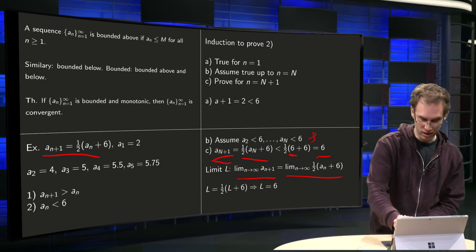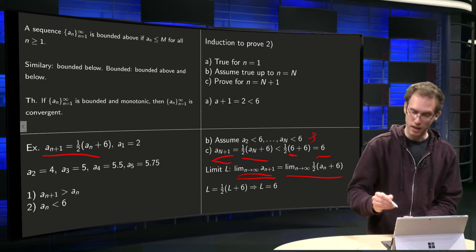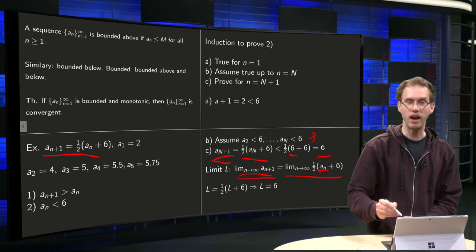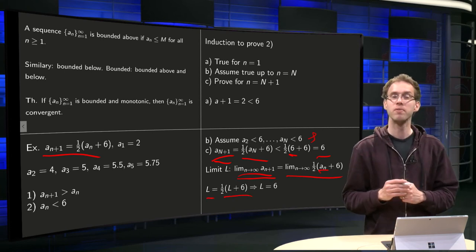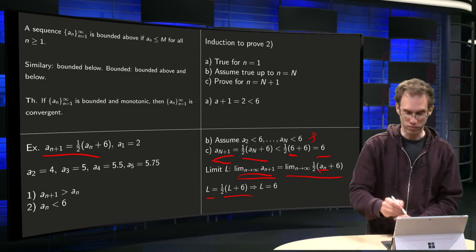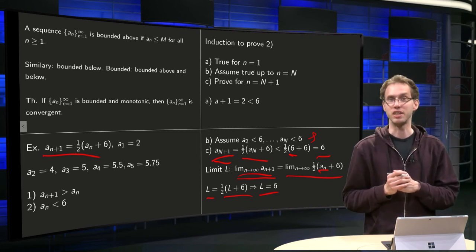So we have, here we get L = 1/2 times, and here we get another L. So L has to be equal to 1/2(L) + 6. And then you can solve for L and you find that indeed L = 6.